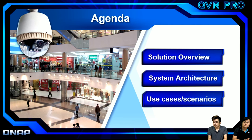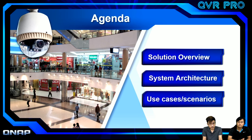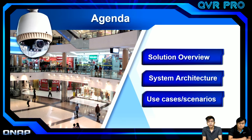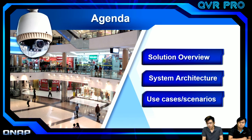The agenda for today's topic has three parts. First is the total solution overview — how QNAP NAS can be a CMS and connect to all your IP cameras. Second is the system architecture, so you understand how we build QVR Pro on top of our NAS. Third are the use cases and scenarios — samples for home users, factory users, and more. If you have a QNAP NAS, this is a great opportunity.